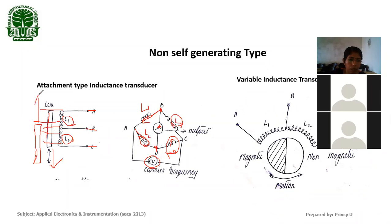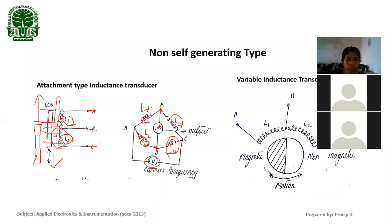When we move the core upward, the magnetic reluctance path increases for one side. The presence of the high permeability core increases in the L1 region and decreases in L2, so there will be a change in inductance in L1 and L2. If there is a change in inductance value and these are connected as arms of the Wheatstone bridge, the output voltage will be increased.